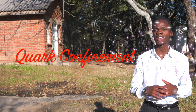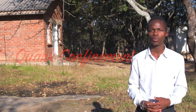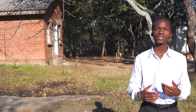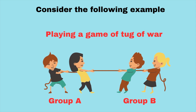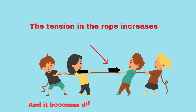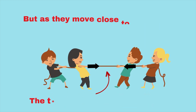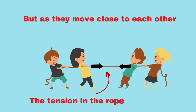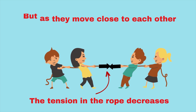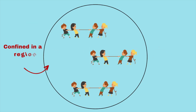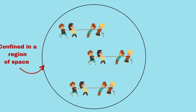However, these quarks can never be found alone in isolation, and this is referred to as quark confinement. Consider the following example: you have two groups of children playing tug-of-war. As they pull the ropes in opposite directions, the tension in the rope increases, and it becomes difficult for them to be separated. But as they come close to each other, the rope becomes slack and the tension decreases. Hence, they are able to move around, but they still remain confined in a region of space.